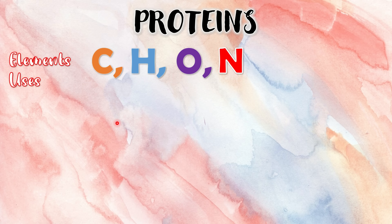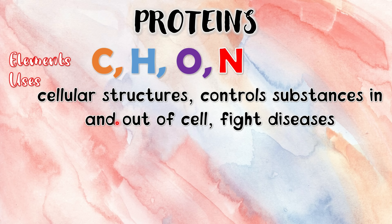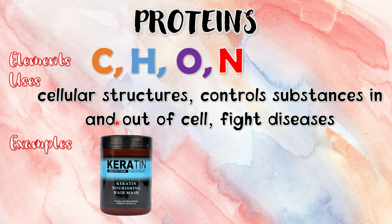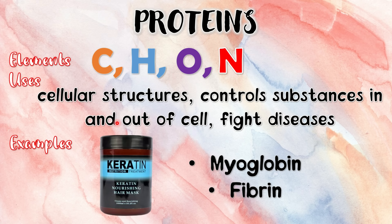Proteins serve many functions in cells. First, they form cellular structures — one example is our hair. Next, they control substances in and out of the cell, acting as receptors and transport channels. Lastly, they help with our immunity by fighting diseases through antibodies that are made of proteins. Examples of proteins include hemoglobin in our blood, collagen, insulin, keratin, myoglobin, and fibrin.